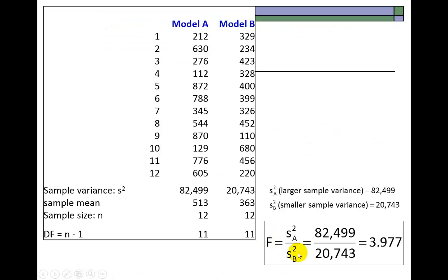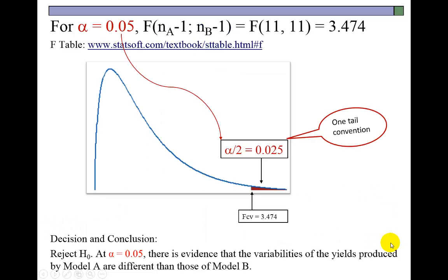And so, as you can see, going back here, the calculated F of 3.98 exceeds the critical value of 3.47 and therefore, we reject the null hypothesis and conclude that there is evidence that the variabilities of the yields produced by model A are different than those of model B.